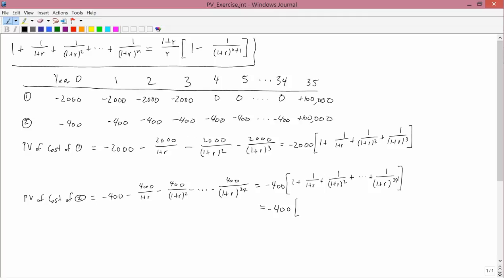So in brackets now, I have exactly the expression at the upper left-hand corner of the screen where n is 34. Therefore, I can write that as 1 plus r over r times 1 minus 1 over 1 plus r to the n plus 1, which would be 35, because n is 34. So that gives me expressions for the present value of the costs.